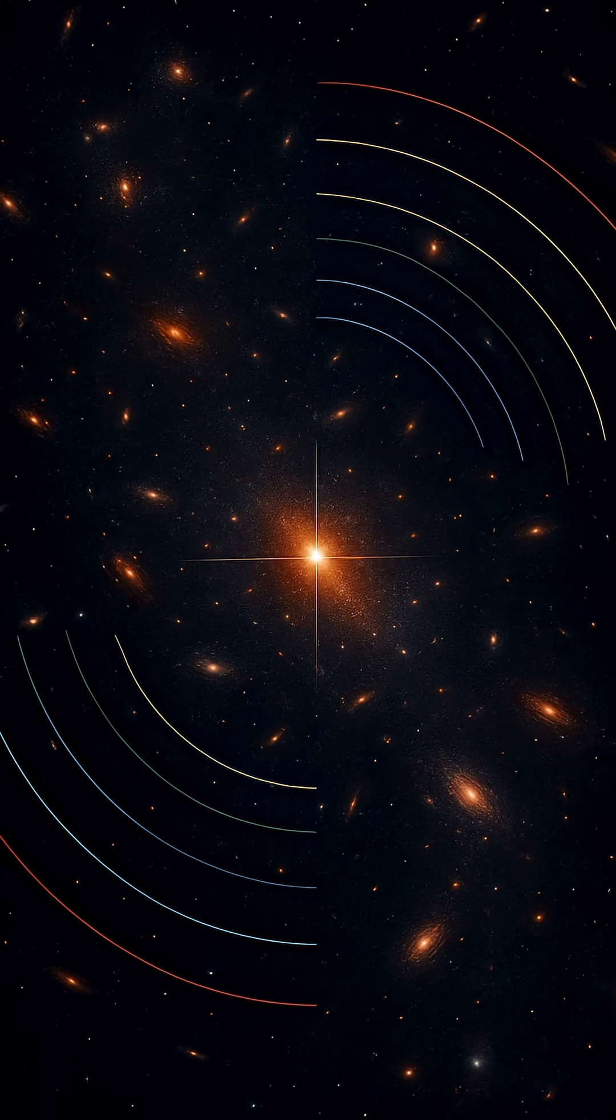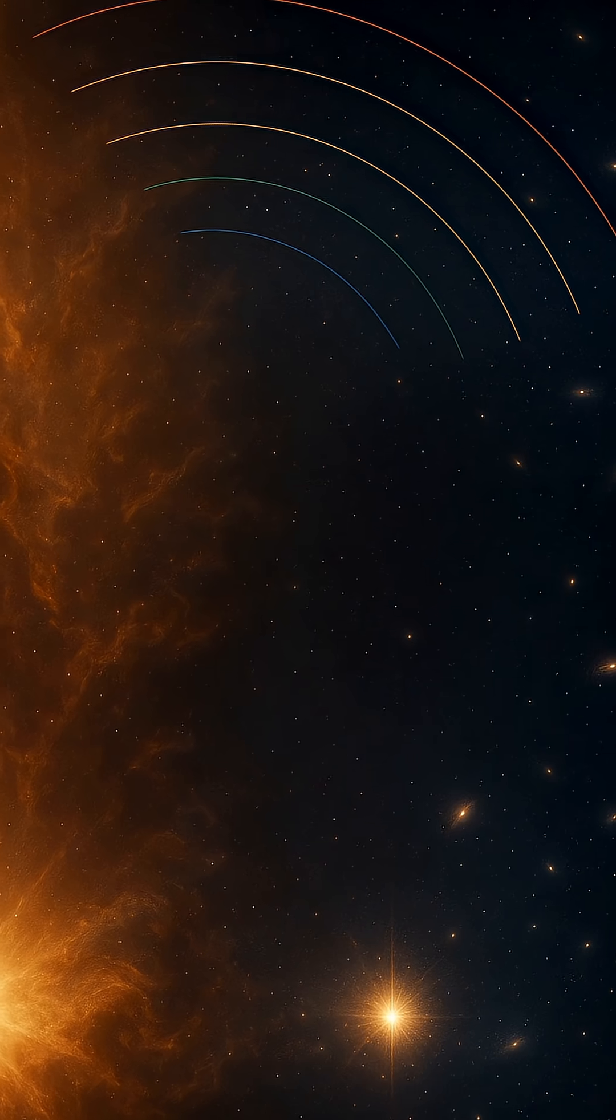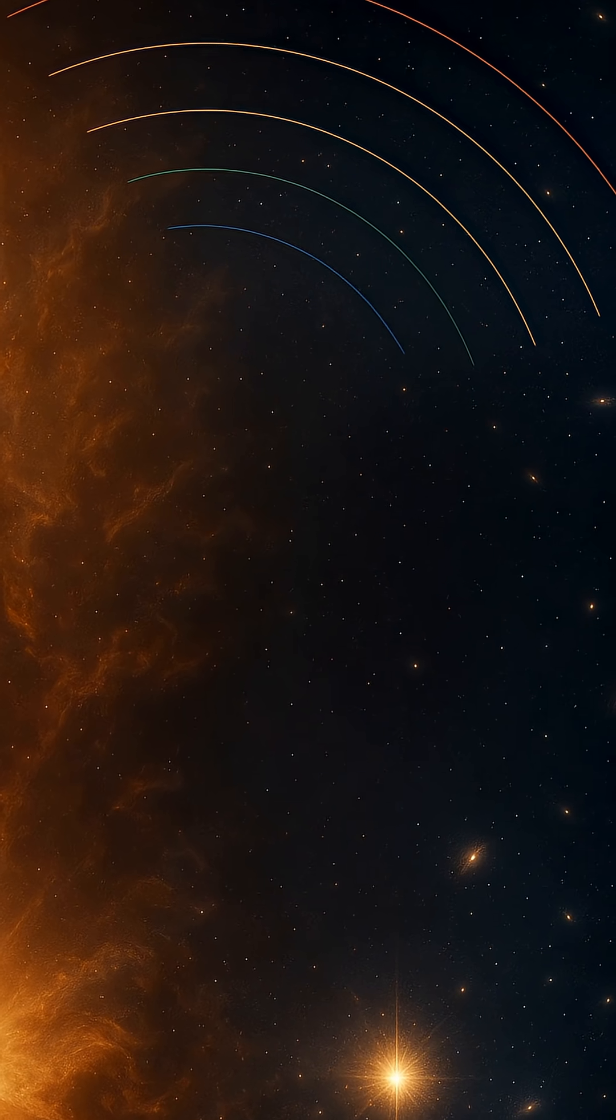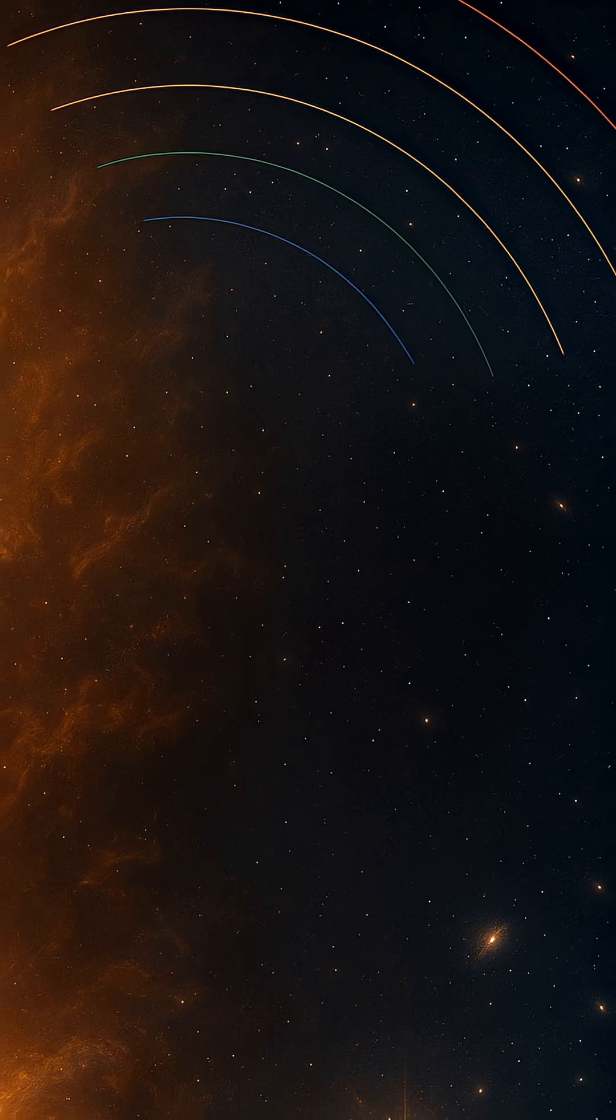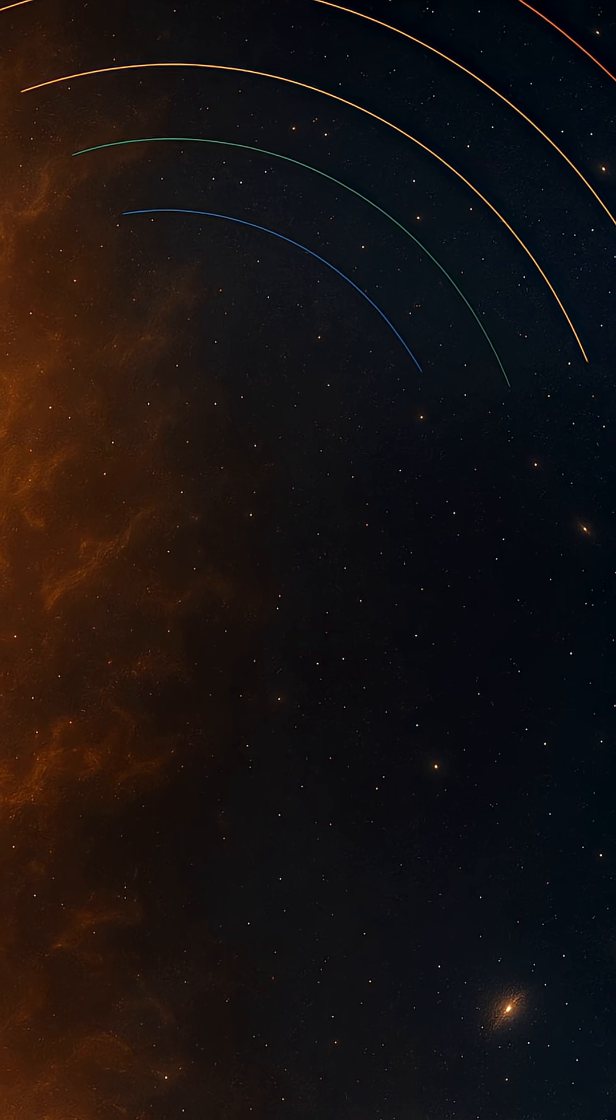This redshift wasn't a random pattern. Edwin Hubble in the 1920s mapped it against the distances of those galaxies and uncovered a cosmic law. The farther away a galaxy is, the faster it's receding.